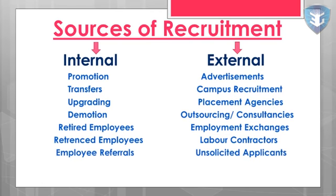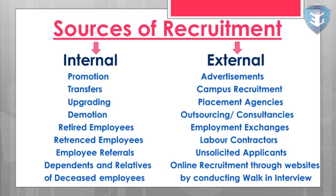Employee referrals are an internal source — employees working in the company can refer their friends, family, and relatives for recruitment. An external source is data banks — companies maintain data banks of unsolicited applicants, review them, call them for interview and select them. Dependents and relatives of deceased employees are an internal source — companies can offer jobs to dependents and relatives of employees who have passed away.